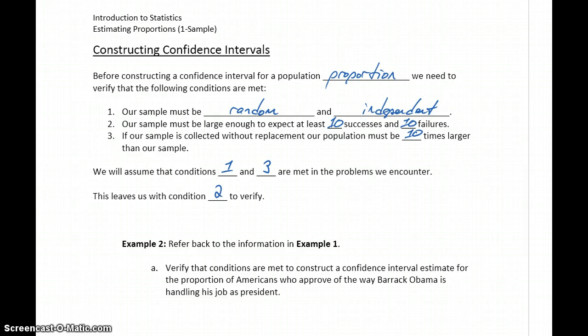What we need to know is that our number of successes is greater than or equal to 10, and our number of failures is also greater than or equal to 10. In some cases, that's easy to identify because we're told 1,000 people were surveyed, 15 people responded this way, everybody else responded this way, so we just have those numbers to deal with.